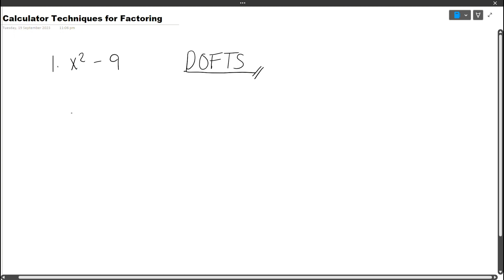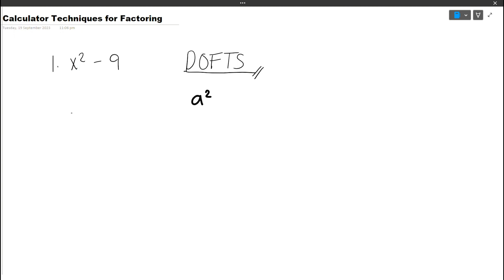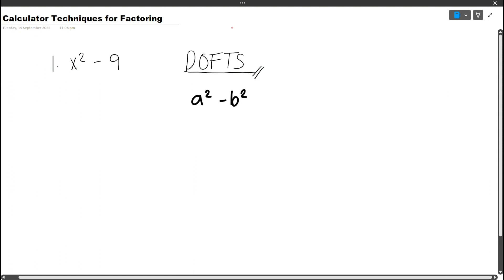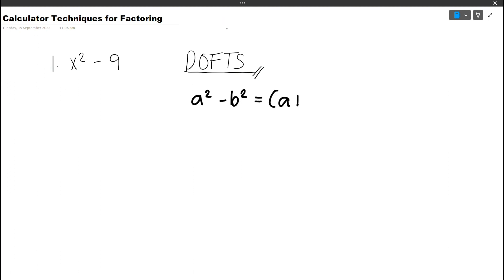The difference of two squares is in the form a squared minus b squared. If we factor this equation, we get a plus b times a minus b.